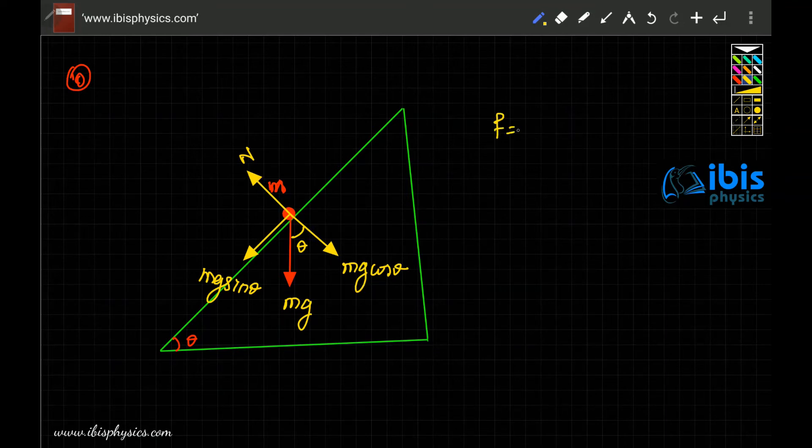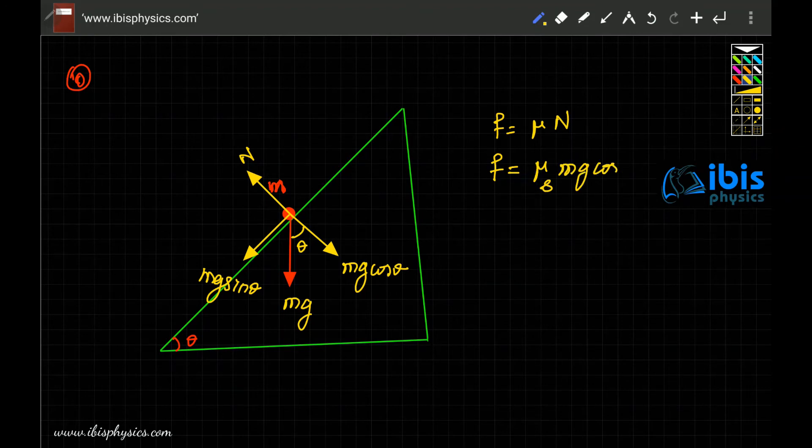We know that frictional force is mu times normal reaction. Here the block is coming along this way, it is not jumping up or down in this way. Then N must be balancing mg cos theta, or we can simply say that these two forces are balancing each other. Then the maximum frictional force is maximum coefficient of friction, which we call static friction, into normal reaction, in this case mg cos theta.